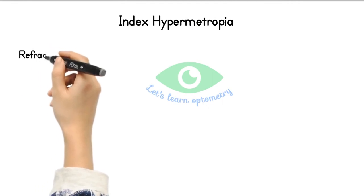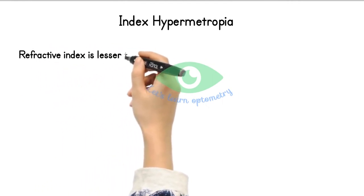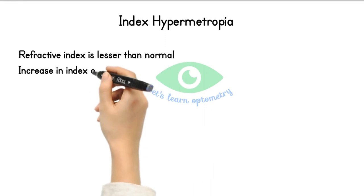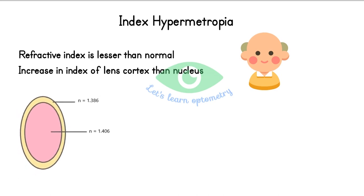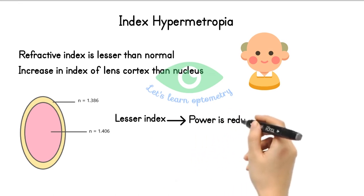Index hypermetropia: when the refractive index of the media is less than normal. It's due to increase in the refractive index of lens cortex compared to the nucleus, often seen in elderly patients. At old age, the cortex index increases, the lens becomes more homogeneous, and power decreases, creating hypermetropic error.